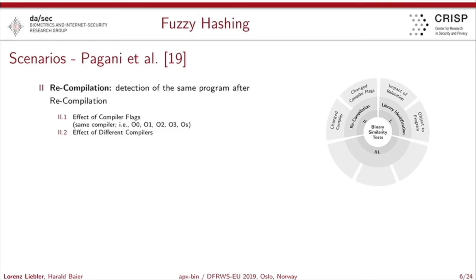The second scenario is the task of recompilation. You have a program and recompile it — for example, with different compiler flags, or in another scenario, you recompile it with a different compiler entirely.